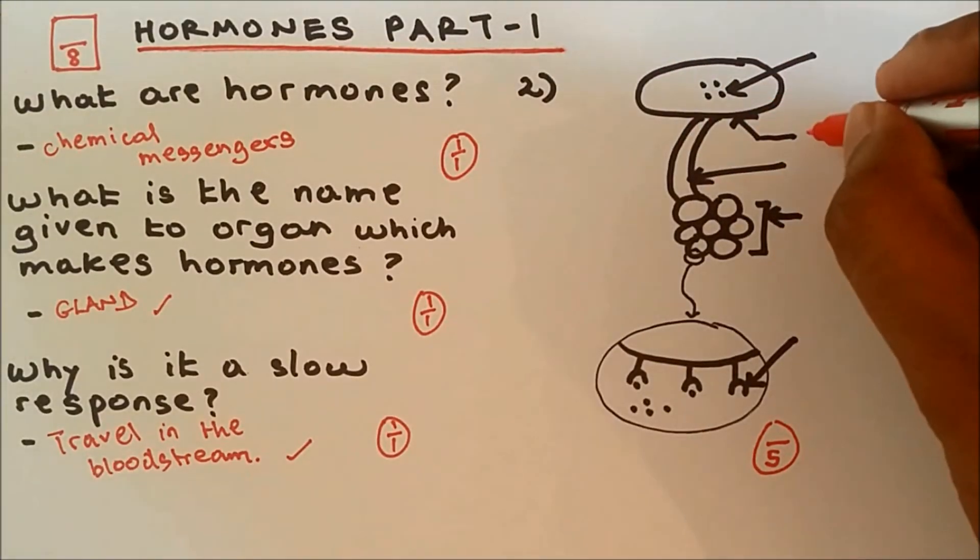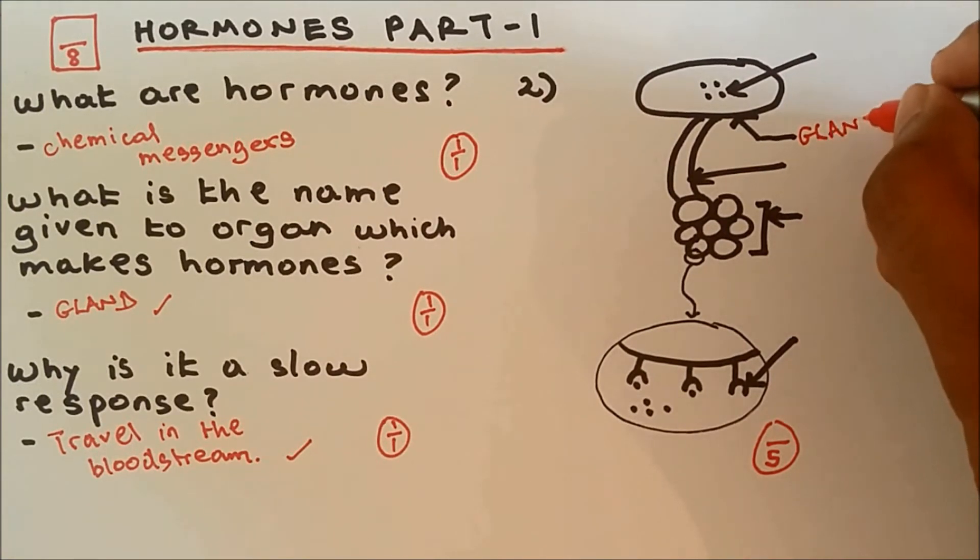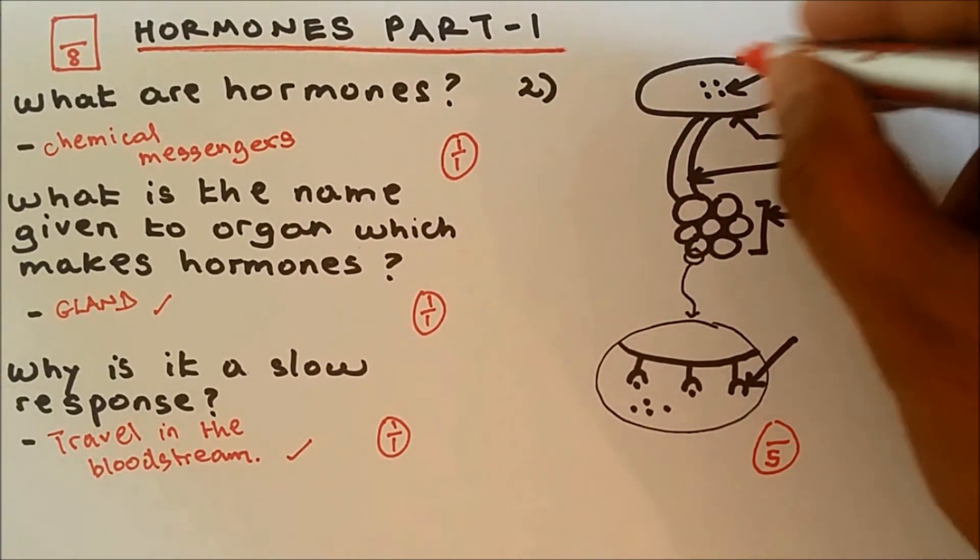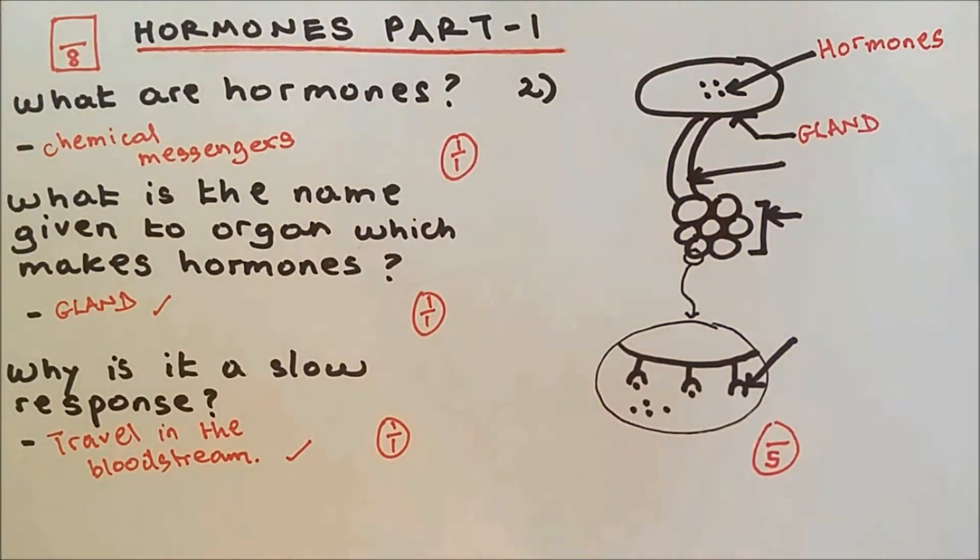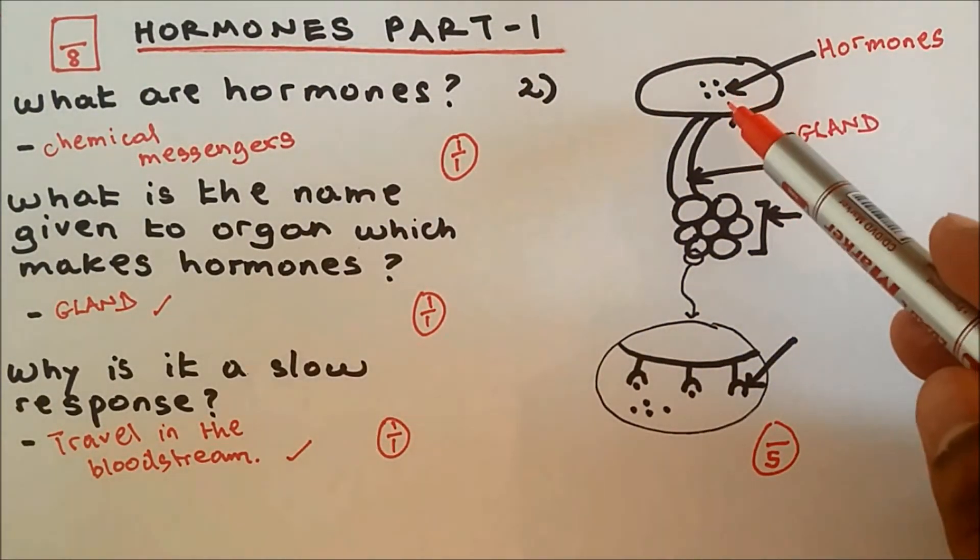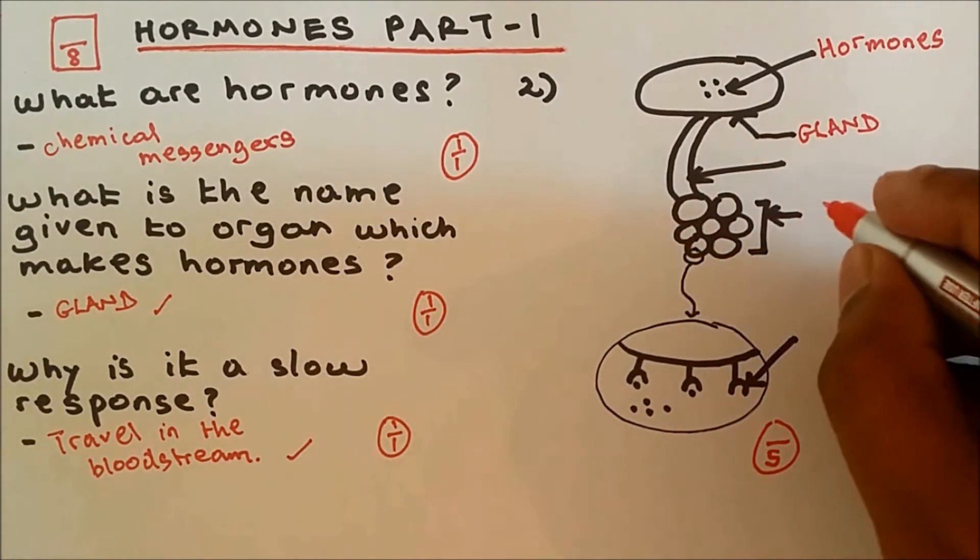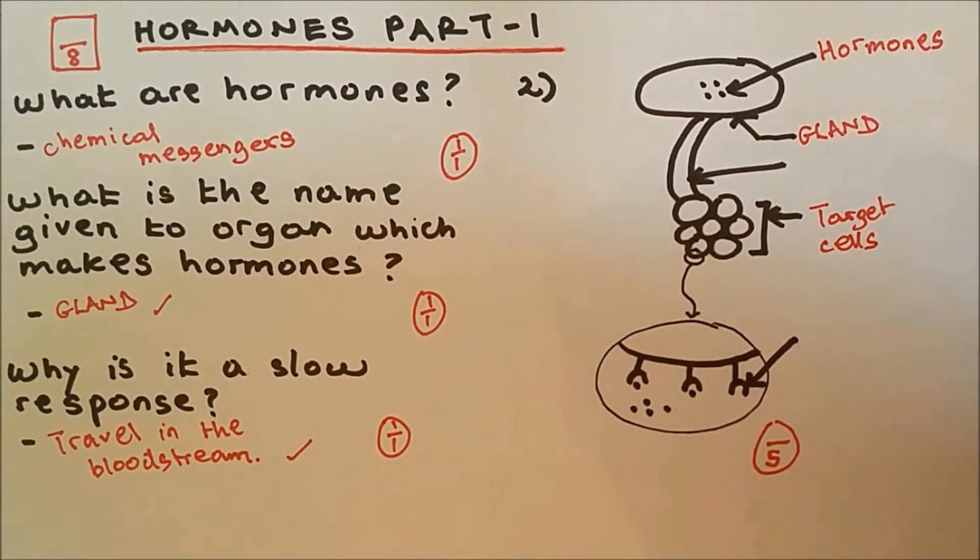And if you have seen my teaching video, then this is gland. And what is made in the gland? Hormones are made in the gland. And these are target cells.